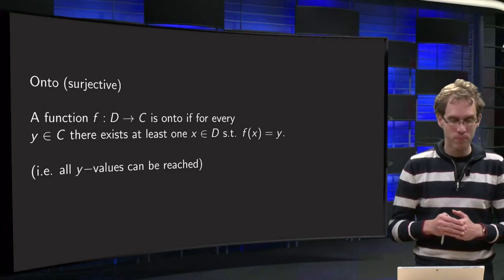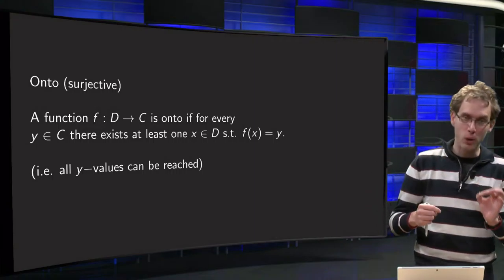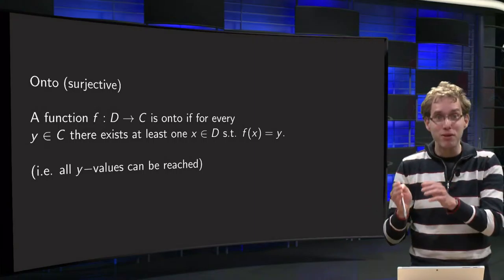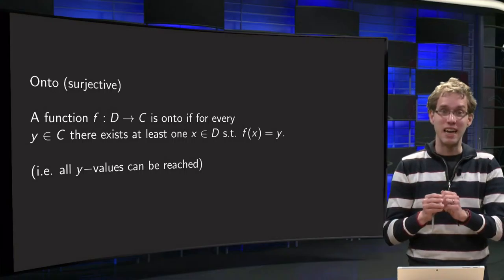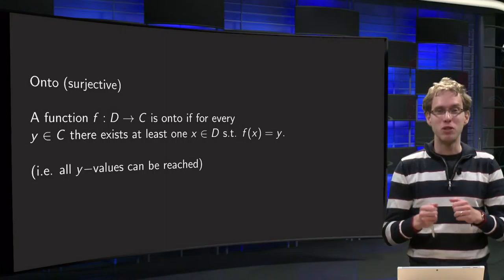So what is onto? A function f from domain to codomain is onto if for every y in the codomain there exists at least one x in the domain such that fx equals y. So what does that mean?